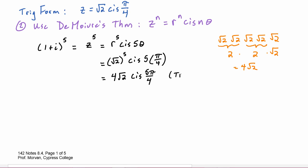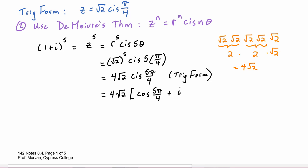We were instructed to put our final answer into rectangular form, so we have to expand out the trig form. This becomes 4 radical two times the quantity cosine of five pi over four plus i times the sine of five pi over four.